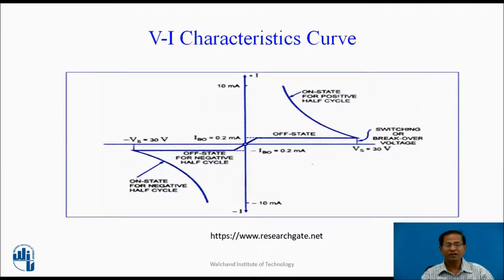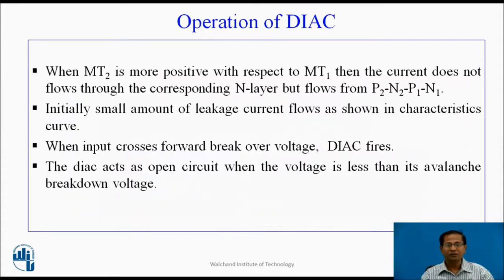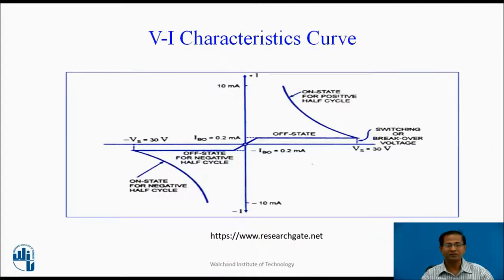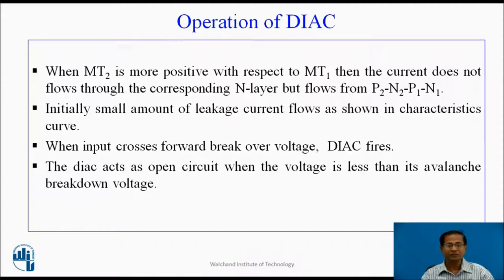This is the VI characteristics of the Diac. It operates in the first and third quadrant. When MT2 is more positive with respect to MT1, the current flows through the P2, N2, P1, N1 layers. Initially, a small amount of leakage current flows as shown in the characteristics curve. When the input crosses the forward break-over voltage, the Diac fires. The Diac acts as an open circuit when the voltage is less than its avalanche breakdown voltage. When the input crosses the avalanche breakdown, the Diac conducts.